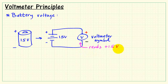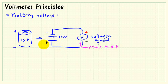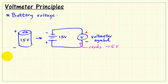Now I connect the voltmeter directly across the battery, and it reads 1.5 volts. If I flip the polarity of the battery such that the polarity is opposite the way the voltmeter is connected, then it reads minus 1.5 volts. So voltage is both a polarity and a value.